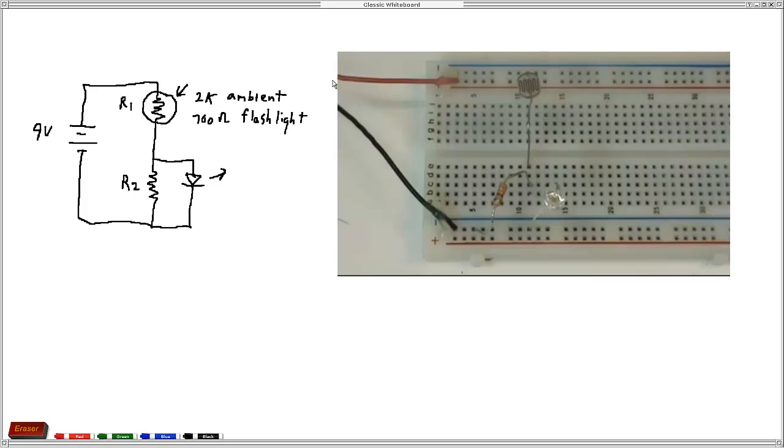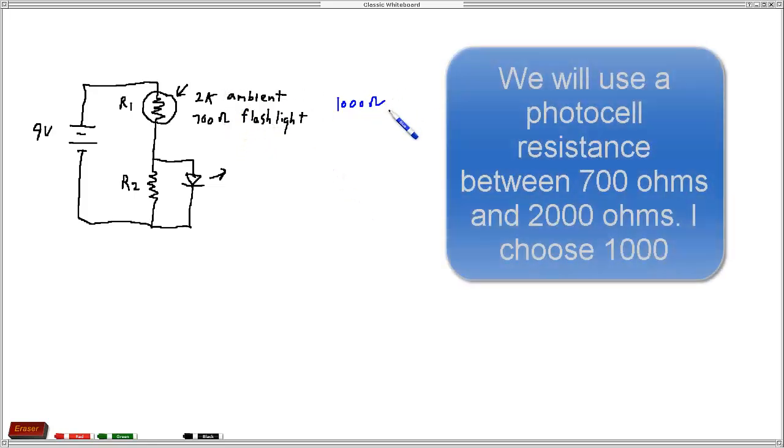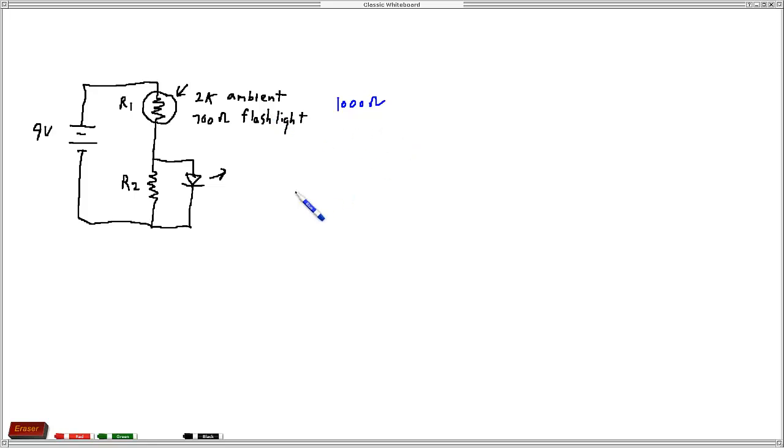I decided that a good threshold would be 1,000 ohms—something in between 700 and 2k. This is my target resistance for the photocell. When this photocell reaches 1,000 ohms, I want the LED to come on.